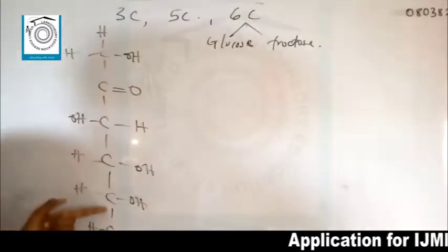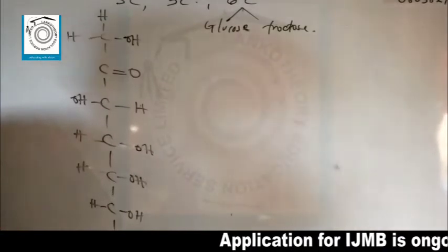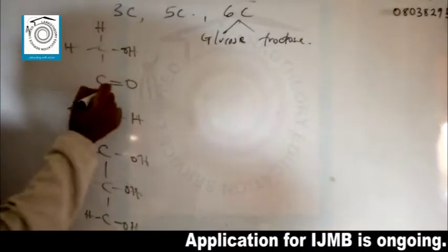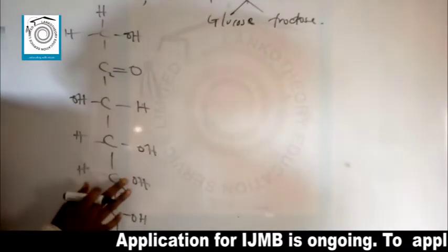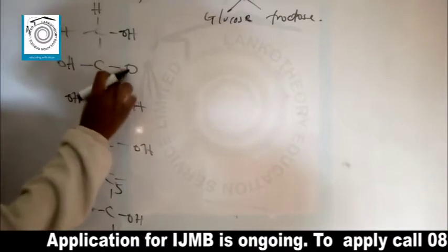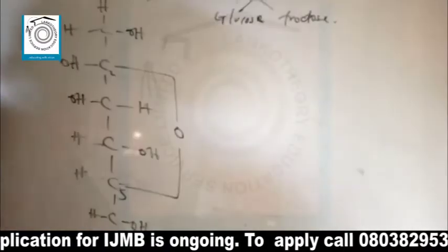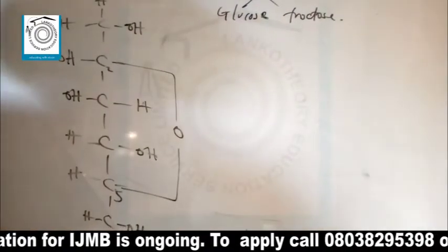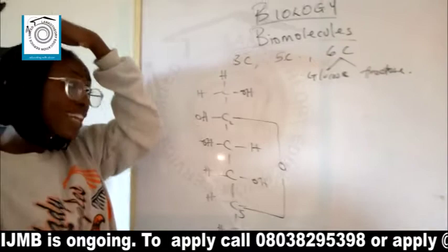The straight-line structure for fructose has the ketone functional group on C2, then H, OH, H, OH, H, OH, and CH2OH. When the carbon atom carrying the functional group and the second-to-last carbon atom react — a C2 to C5 reaction — the OH moves up, the double bond breaks, and oxygen combines to form the cyclic structure.